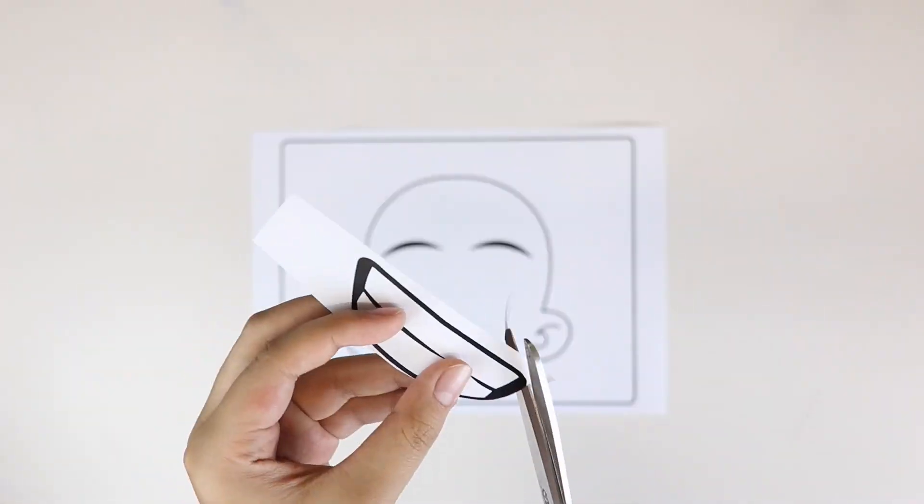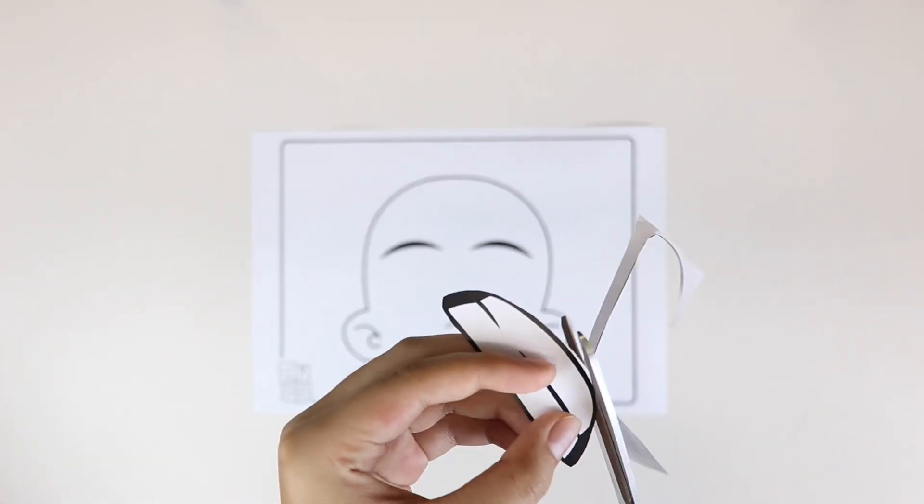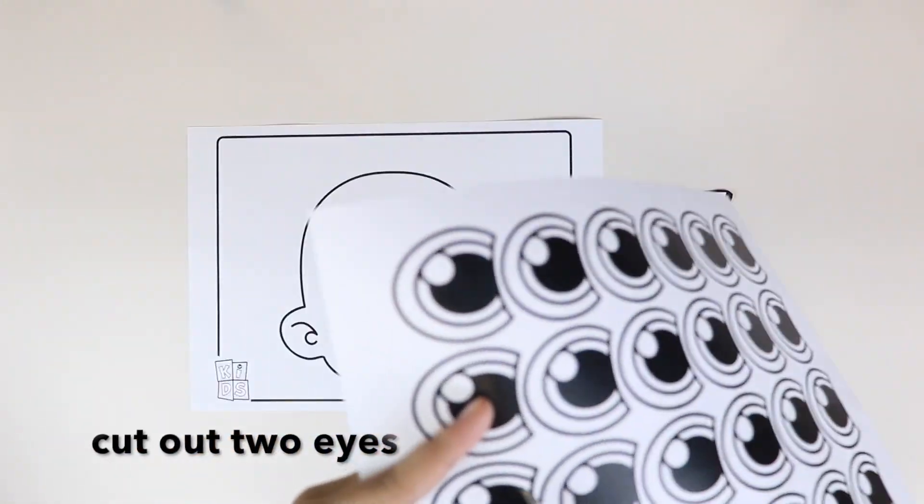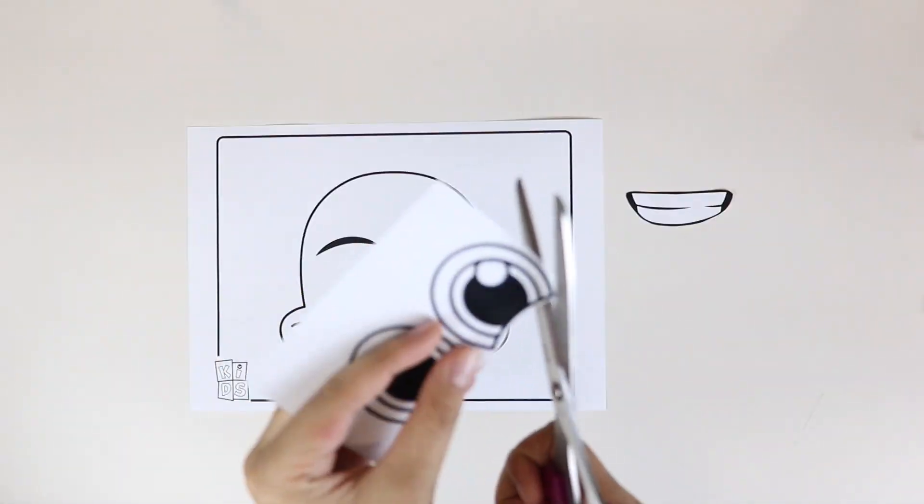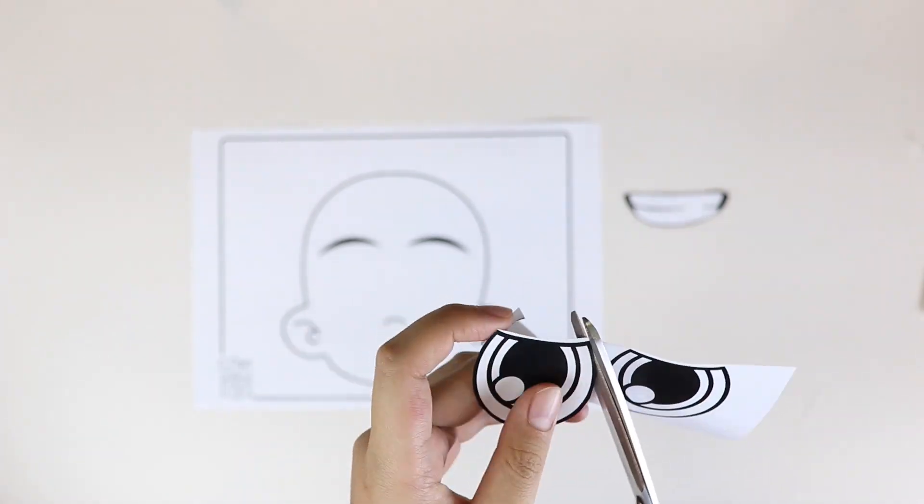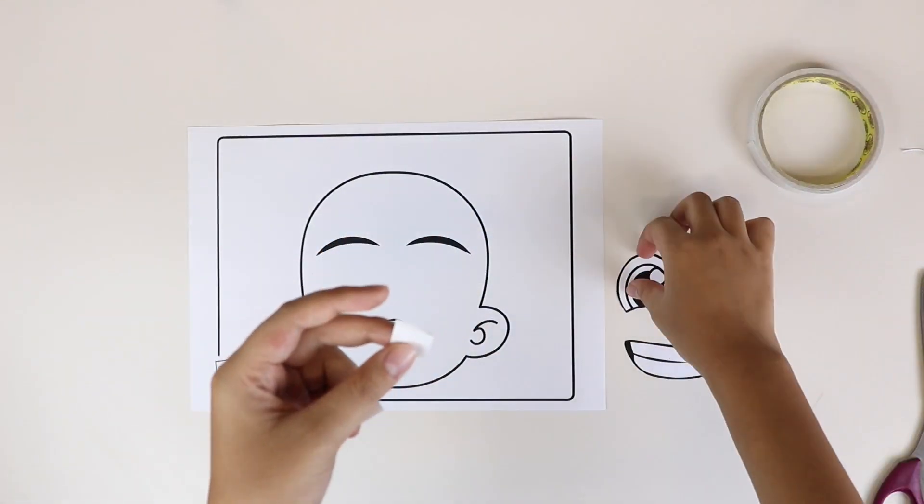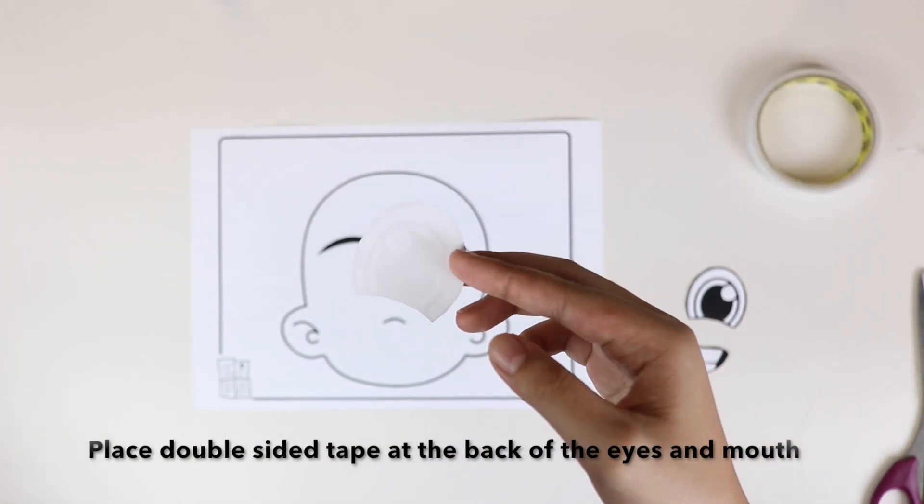To start, cut one mouth print out and cut two eye printouts for each craft kit. Put double-sided tape at the back of each cutout that you just made.